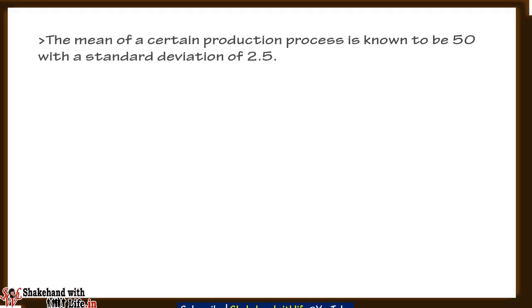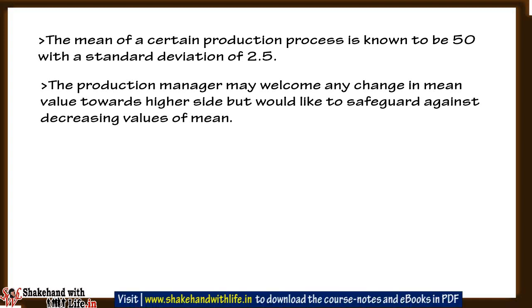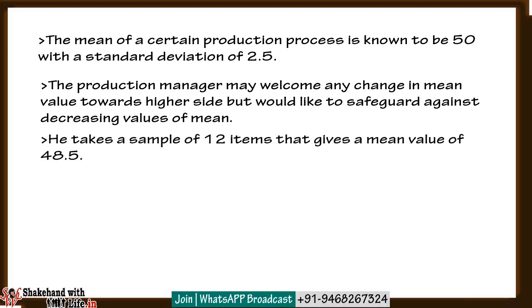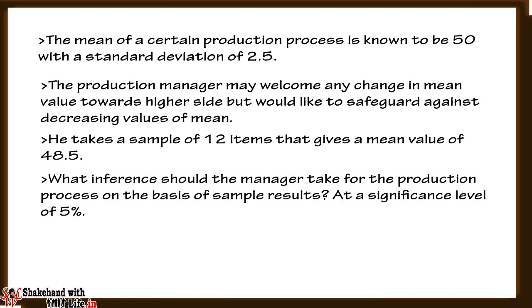Now let's take an example to better understand the one tail test. The mean of a certain production process is known to be 50 with a standard deviation of 2.5. The production manager welcomes any change in mean value towards the higher side, but would like to safeguard against decreasing values of the mean. He takes a sample of 12 items that gives a mean value of 48.5. What inference should the manager take for the production process based on sample results at a 5% significance level?